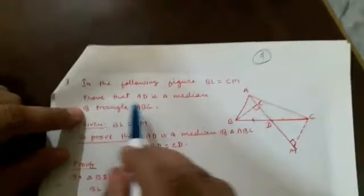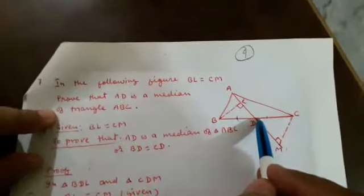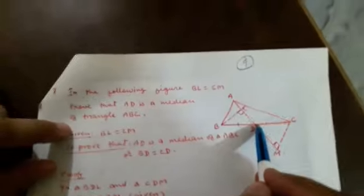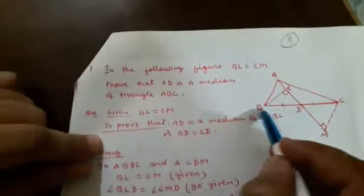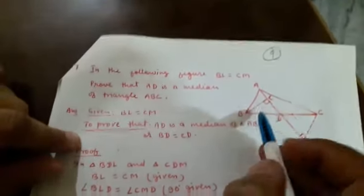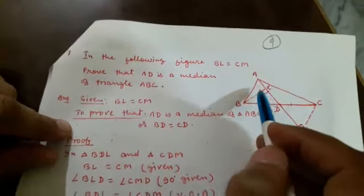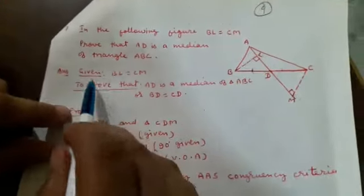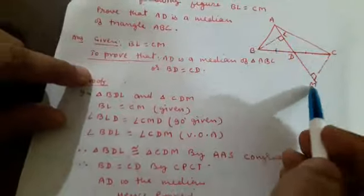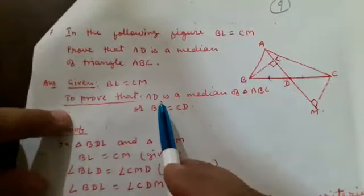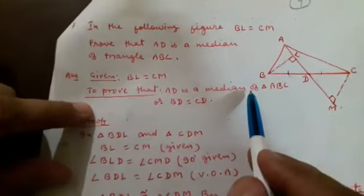Next question: In the following figure, BL is equal to CM. Prove that AD is the median of triangle ABC. If we prove BD is equal to CD, then we can say AD is the median. Given: BL is equal to CM. To prove: AD is a median of triangle ABC.